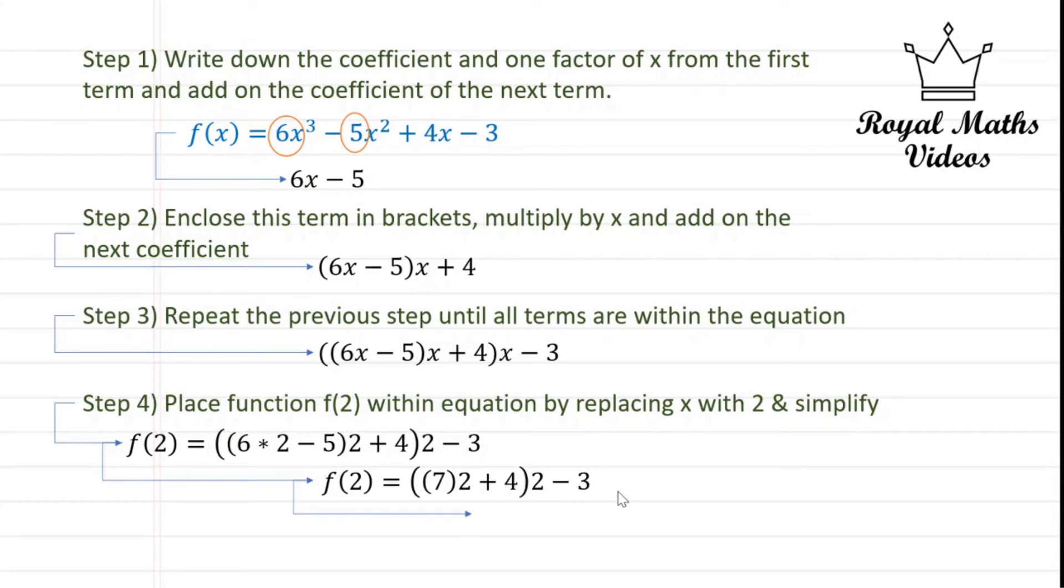So f(2) is equal to 18, where 7 × 2 is 14 plus 4 is 18, times by 2 minus 3. Then we get 18 × 2, which is 36, minus 3 gives us 33. And now we have finally reached the solution.